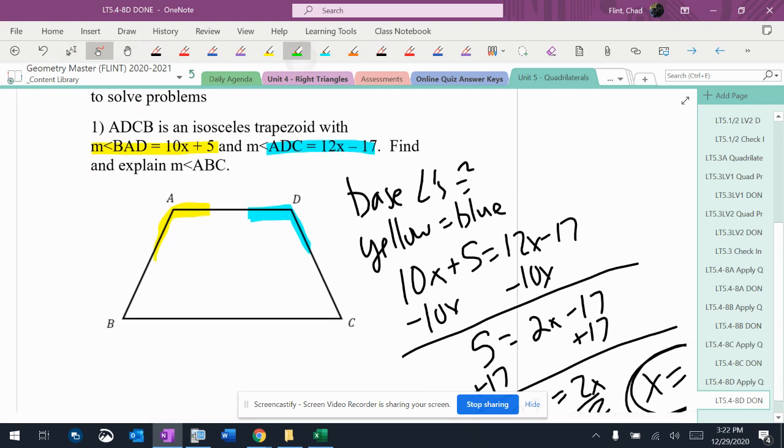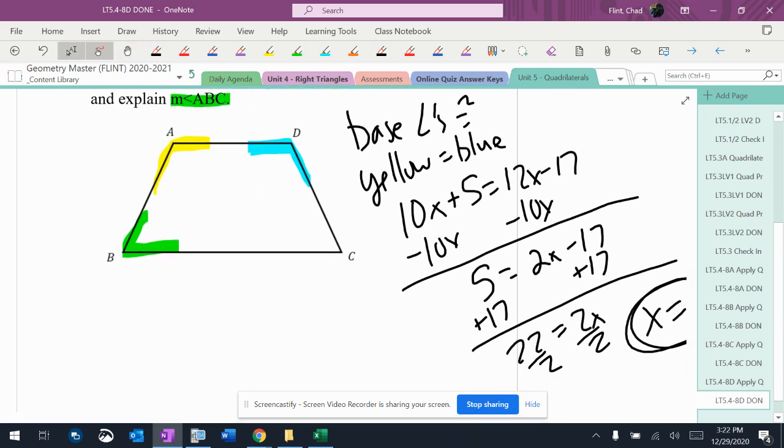Now what does it want to know? It wants to know angle ADC, which is over here. I've got to remember that I have a pair of parallel sides here, and that leads me to these two and the yellow angle being consecutive interior angles.